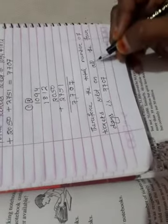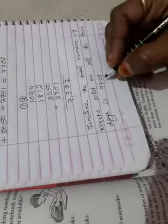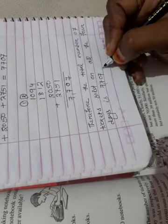Therefore, the total number of tickets sold on all the 4 days is 7707. Number 1 complete.